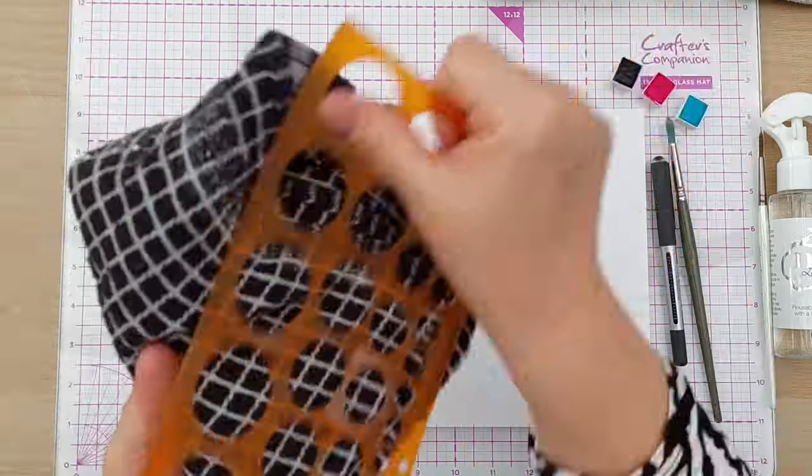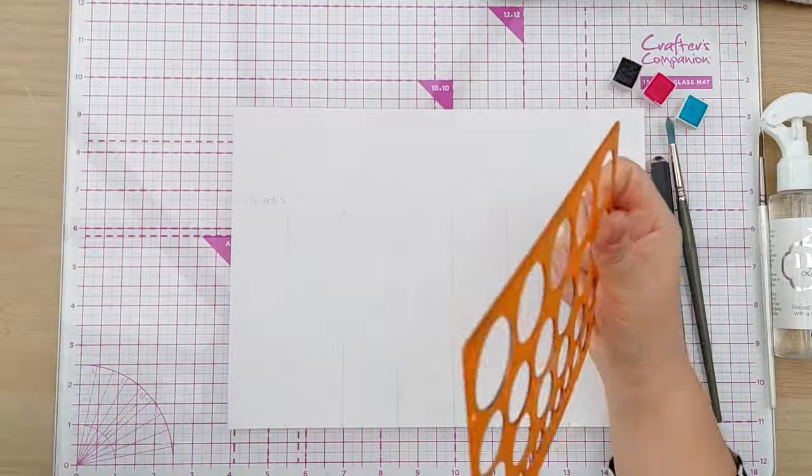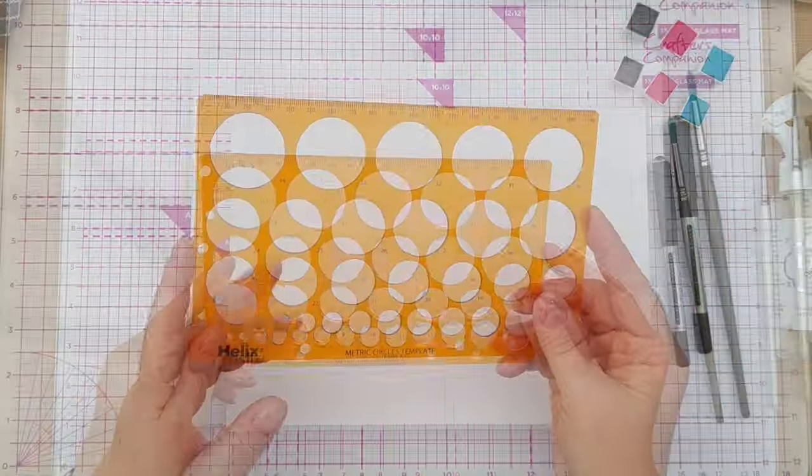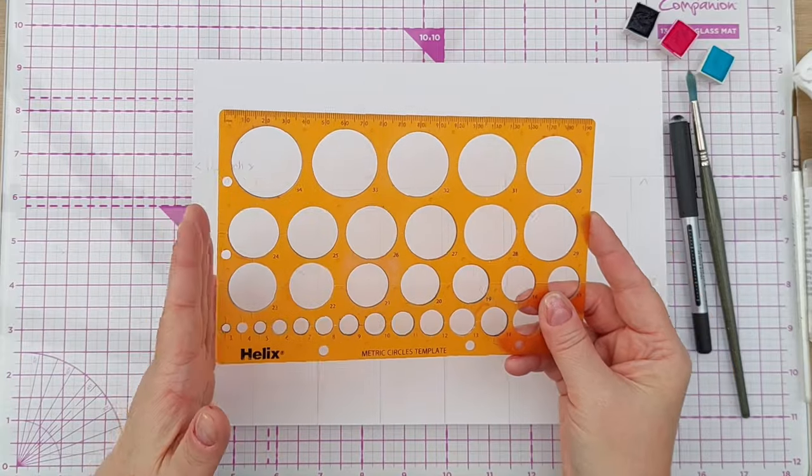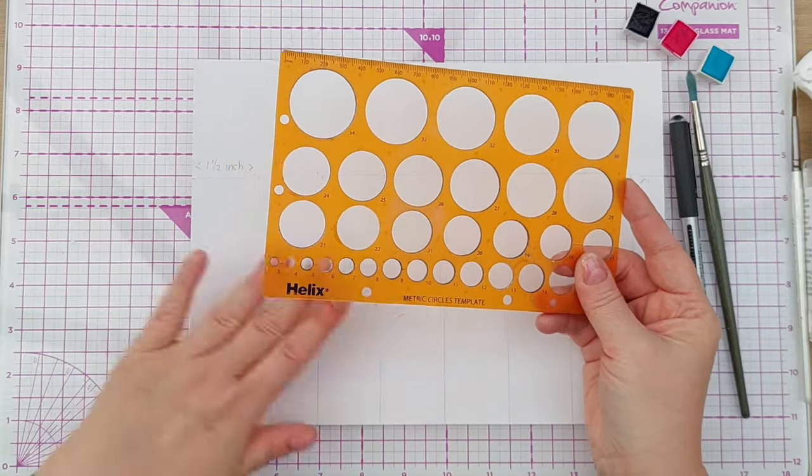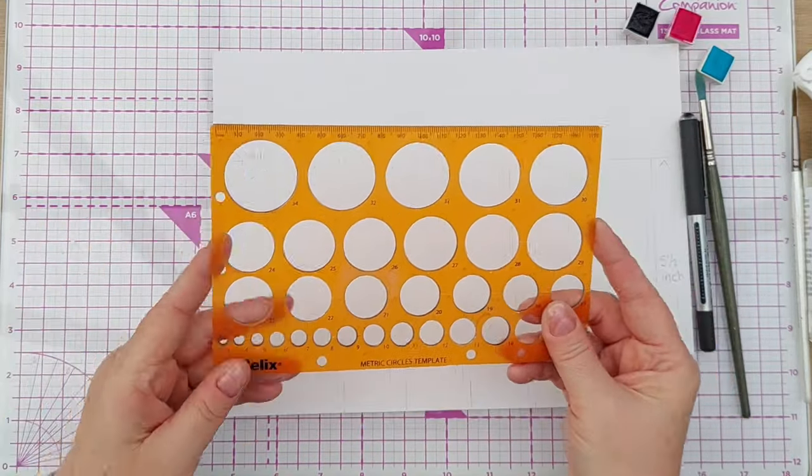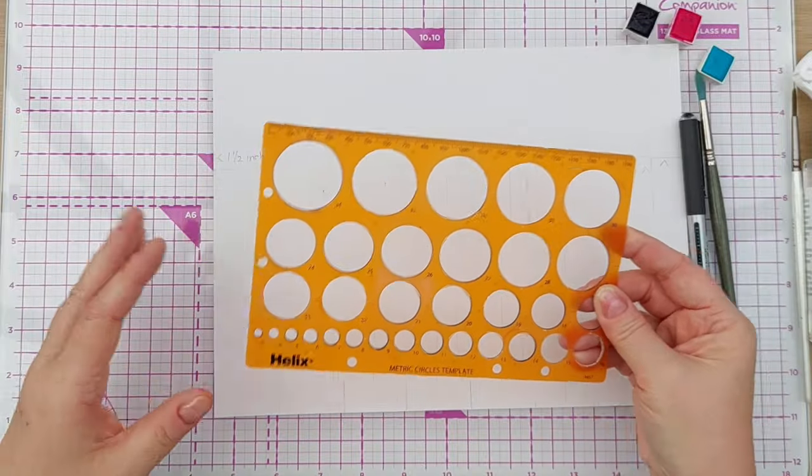I've now got water all over my stencil which I don't want, so I'll just give that a quick dry. So my panel is going to feature baubles which are my favorite Christmas ornaments. I do love circles and I use them a lot in my arts and crafts.